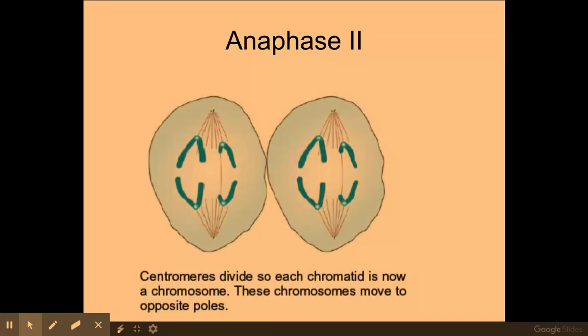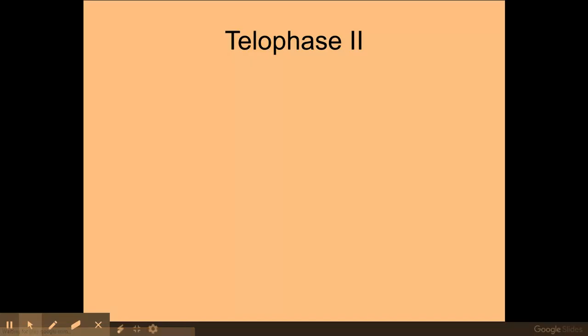Anaphase 2 is where the chromosomes will be pulled to opposite poles of the cell by their centromere by those contractile filaments contracting. Now at this point the centromere is breaking here, and as a result of this my chromosomes are going to be pulled to opposite poles of the cell.